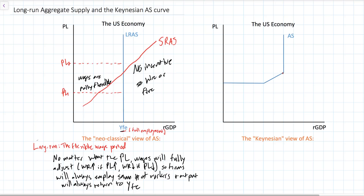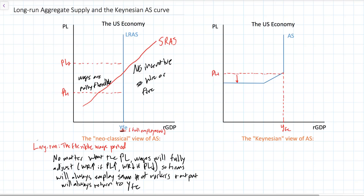This model was developed by economist John Maynard Keynes, who observed that during the Great Depression of the 1930s there was no adjustment of wages following decreases in the price level. So rather than output returning to its full employment level as the neoclassical model predicted, when there was a decrease in prices during the Great Depression — let's say at the original price level of PL1 a country was producing at its full employment level — when prices fell, there were drastic decreases in the level of output and employment.